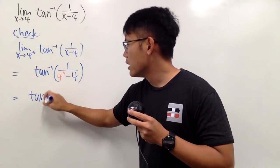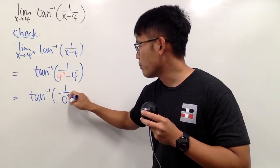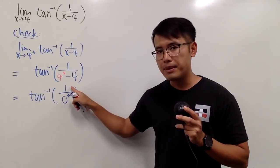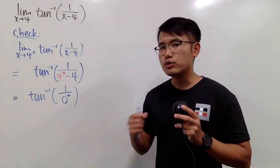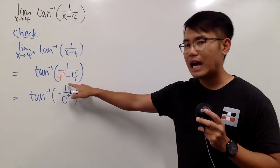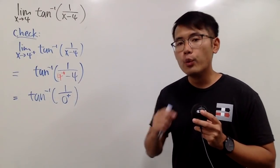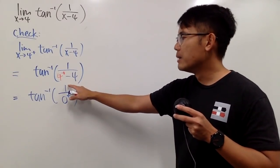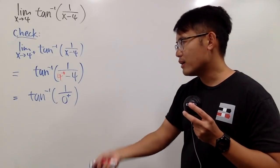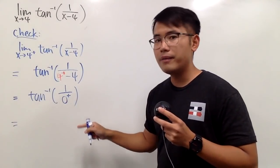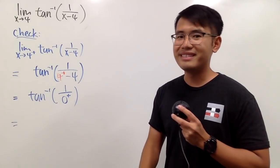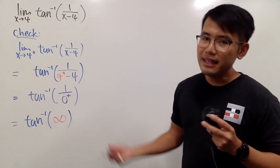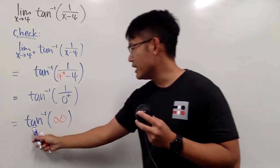So this becomes inverse tangent of 1 over 0 plus. On the top we have positive 1, and 1 over 0 plus is also positive. Whenever we have a nonzero number over 0, we can expect positive or negative infinity — since both numerator and denominator are positive, dividing gives positive. So the inside goes to positive infinity, and we need to find the inverse tangent of positive infinity.